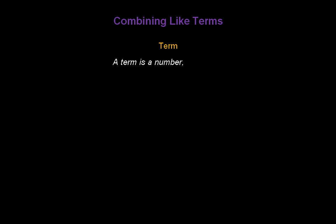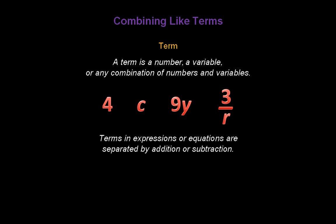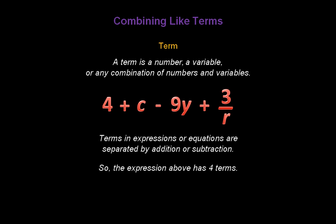What is a term? A term is a number like 4, a variable like the letter c, or any combination of numbers and variables like 9y or 3 divided by r. Terms in expressions or equations are separated by addition or subtraction signs, so the expression above has 4 terms.